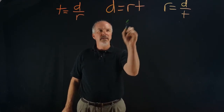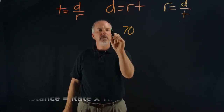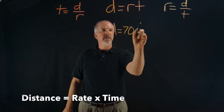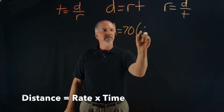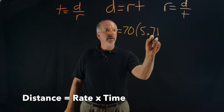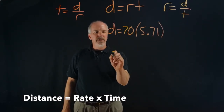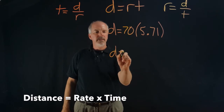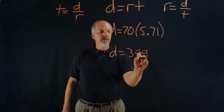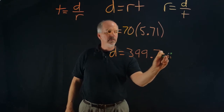We have a rate of 70, we're looking for distance, and we have a time of 5.71 hours. If we multiply that out, we get distance equals 399.7 miles.